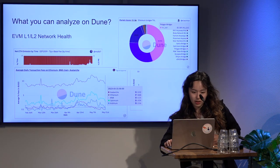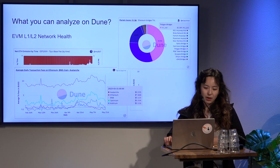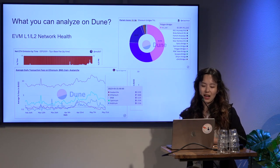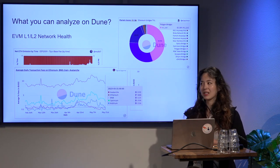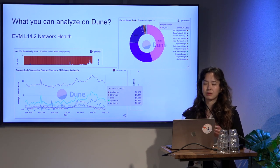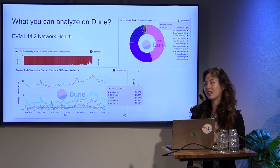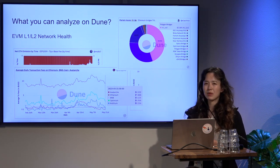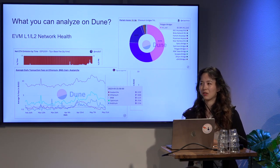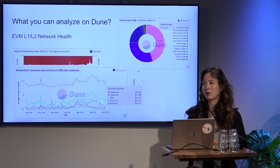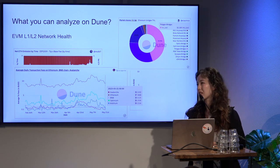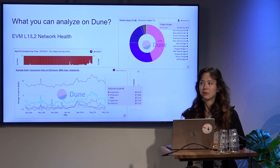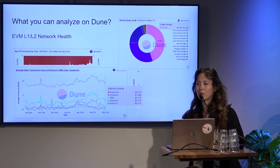Here are my three slides. I want to summarize what you can actually analyze on Dune. It's been an interesting journey — starting from 2018, when I just started to analyze blockchain data, there wasn't much interesting activity going on. Maybe there were some NFTs like CryptoKitties or one or two DEXs, but most stats were more boring, more like 'how does the Ethereum network health look?'